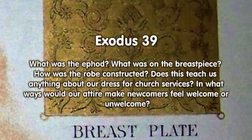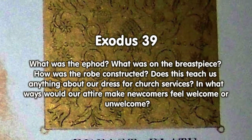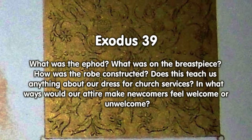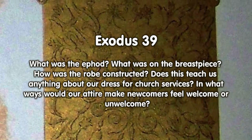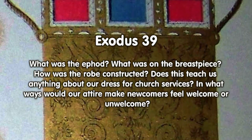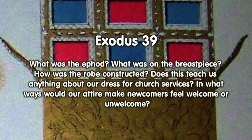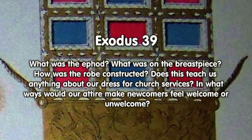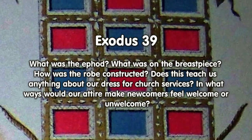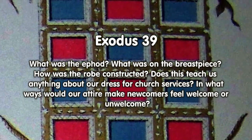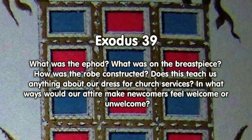In Exodus 39, what was the ephod? What was on the breastpiece? How was the robe constructed? Does this teach us anything about our dress for church services? In what ways would our attire make newcomers feel welcome or unwelcome?